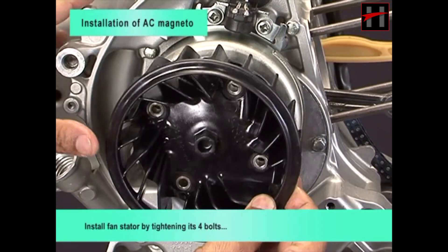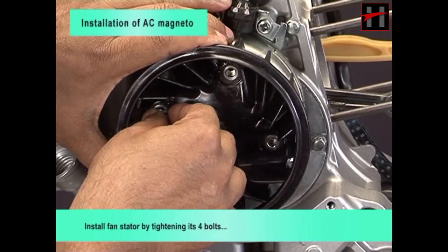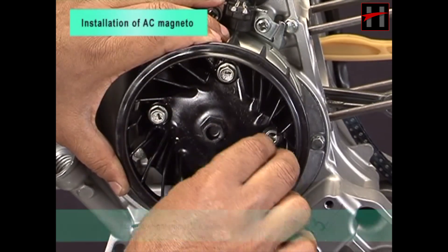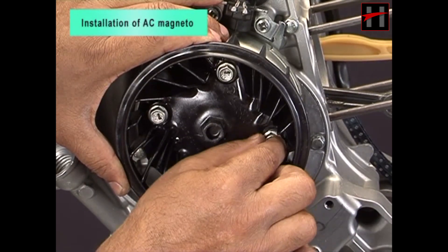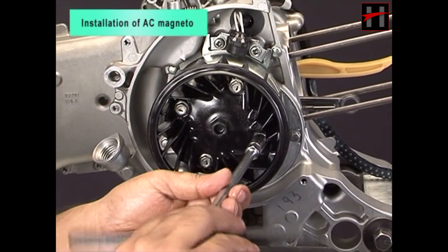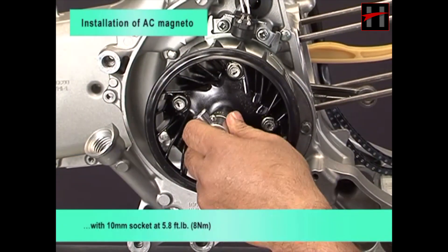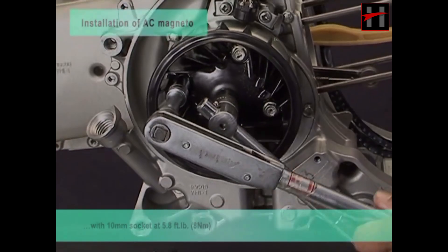Install fan stator by tightening its 4 bolts with 10 mm socket at 5.8 ft-lbs.